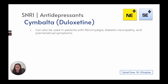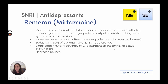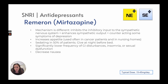Cymbalta, or duloxetine, has a typical dose of 30 to 120 milligrams a day and can be used for fibromyalgia, diabetic neuropathy, and premenstrual symptoms. Remeron has a typical dose of 15 to 45 milligrams per day. Its mechanism inhibits the inhibitory input in the sympathetic nervous system, enhancing sympathetic output to counteract depression. Importantly, it increases appetite and is often used in cancer patients and nursing homes. It causes sedation in 50% of patients and is typically given at bedtime. It has significantly lower GI disturbances, insomnia, sexual dysfunction, and nausea than other SNRIs.